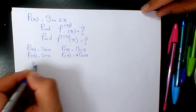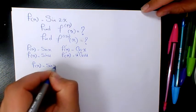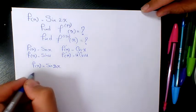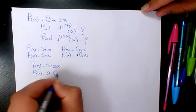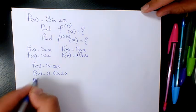So here we have sine 2x. It means that the first derivative will be 2 times cosine 2x. Second derivative will be 4 times negative sine 2x.